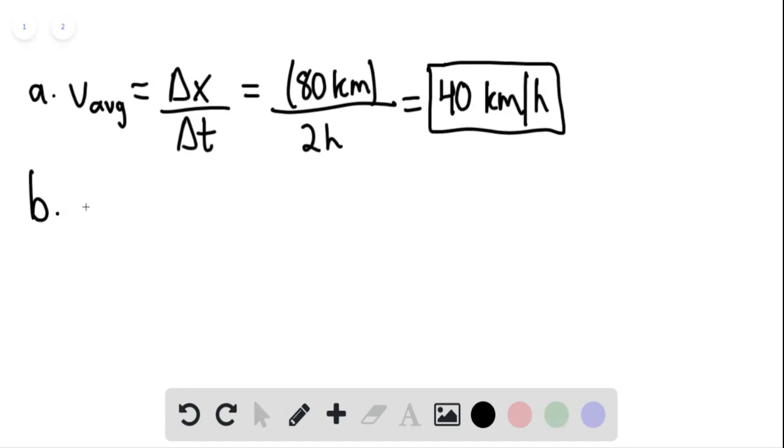For part b, then, we know that in this case, the average speed is the same as the magnitude of the average velocity. So we can say that the average speed is, in this case, equaling the average velocity. And in this case, this would be 40 kilometers per hour.